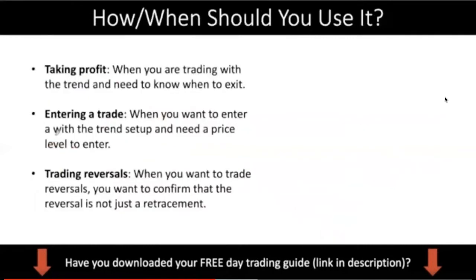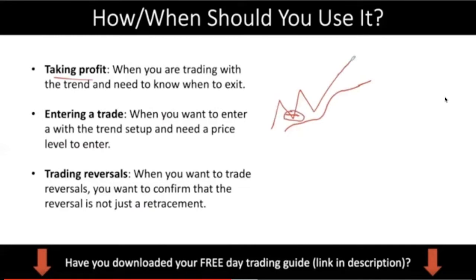So when should you use it? I want to go through these three scenarios first. Number one is very obviously taking profit. Let's say you bought somewhere and you have a chandelier exit long trailing below price. You're in profit but you need to know when to exit — you want to capture as much profit as possible without giving it back. So you trail your stop loss. When price comes back down and breaks below the chandelier stop, then you exit. That is very straightforward. This is how you use it the way it's meant to be used: as a chandelier exit to help you exit.